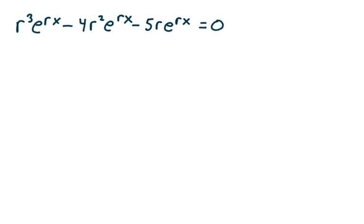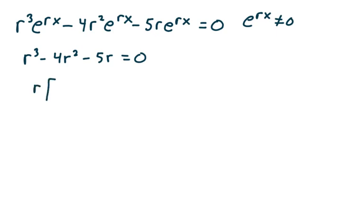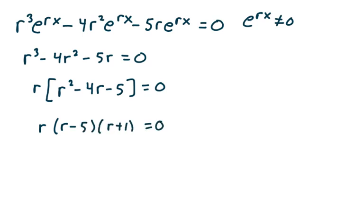Remember that e to the rx is never 0, so I have r cubed minus 4r squared minus 5r equals 0. Factoring out the r, I get r times the quantity r squared minus 4r minus 5 equals 0. Factoring further, I get r times r minus 5 times r plus 1 equals 0. Solving for r, I get r equals 0, r equals 5, or r equals negative 1.